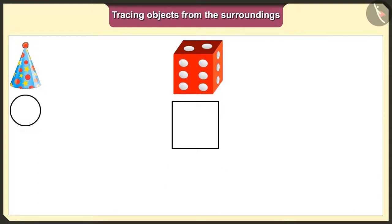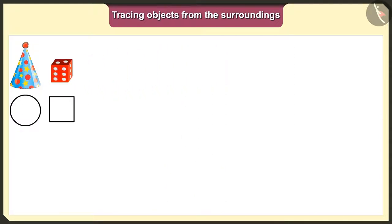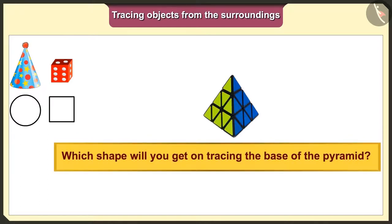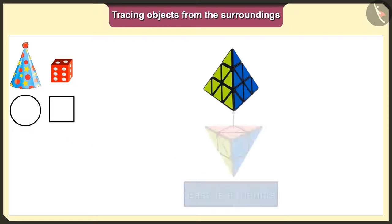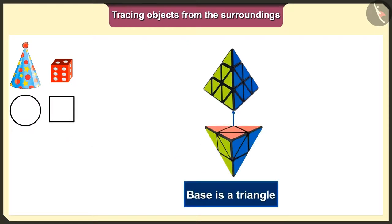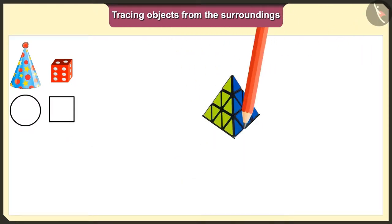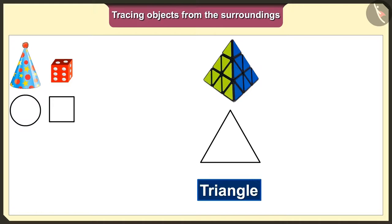Now, let's see which shape we would get when we trace this pyramid shaped toy. The base of this toy is a triangle. So, we will get a triangle shape when we trace it.